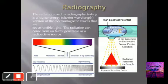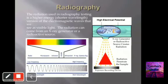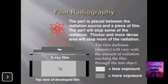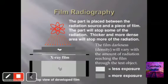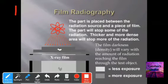In film radiography, the part is placed between the radiation source and a piece of film. The part will stop some of the radiation — thicker and more dense areas stop more radiation. The film darkness varies with the amount of radiation reaching the film through the test object, allowing identification by color coding.